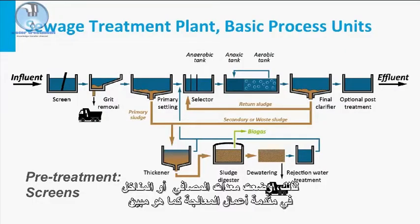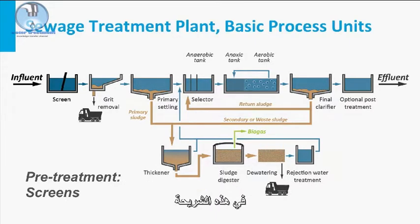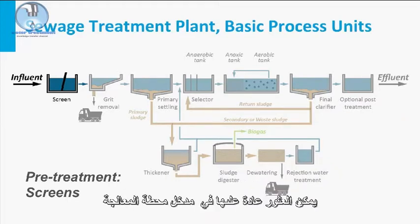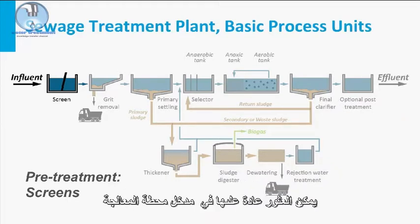Therefore, screen devices or sieves are placed up front in the treatment works as indicated in this slide. The first set of screens are generally bar screens, also mentioned as coarse screens, and can typically be found at the entrance of the STP.